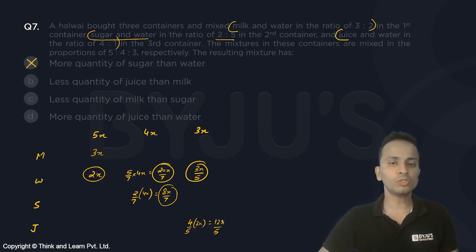Second option: less quantity of juice than milk. Juice is 12x upon 5, that is 2.4, and milk is 3x. So yes, we have less quantity of juice compared to milk. Option B is correct.